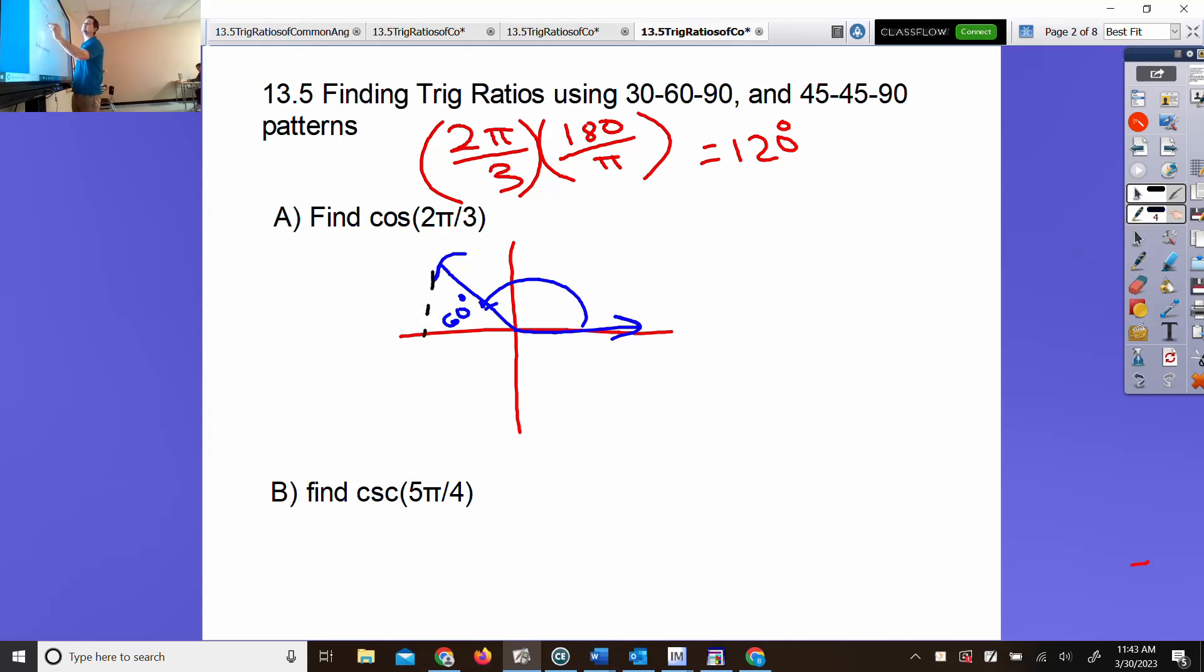Reference angles are formed by the x-axis and the terminal side. You've got a good spot to draw a right triangle. The reference angle is formed by the terminal side and the nearest x-axis. I see a 60-degree angle. I just asked you to jot down numbers on 30-60-90 theorem: 1, 2, root 3.